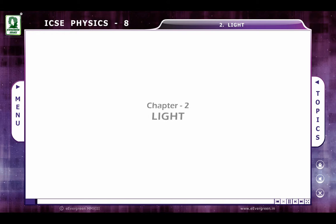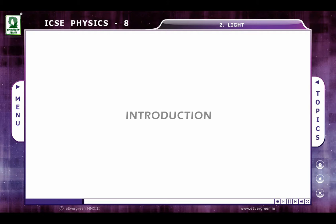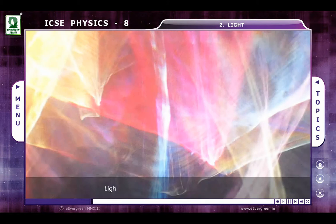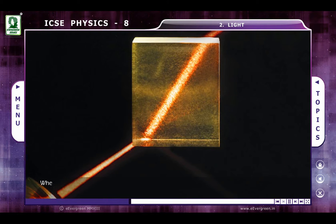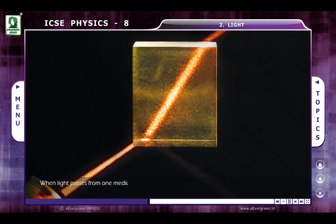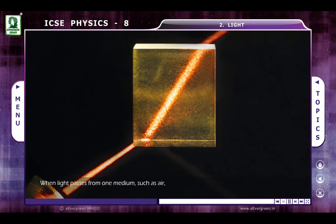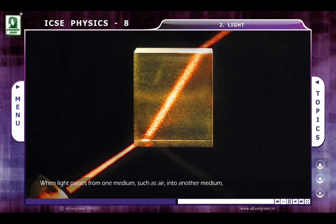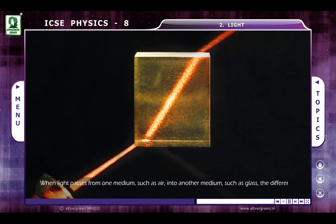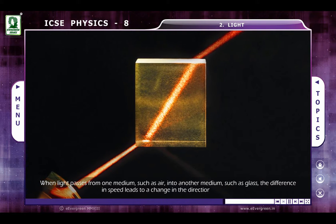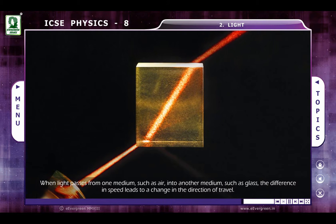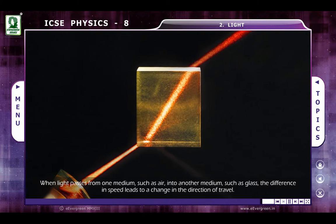Chapter 2: Light. Introduction. Light can travel through many different media. When light passes from one medium, such as air, into another medium, such as glass, the difference in speed leads to a change in the direction of travel, depending on the nature of the materials and their shapes.